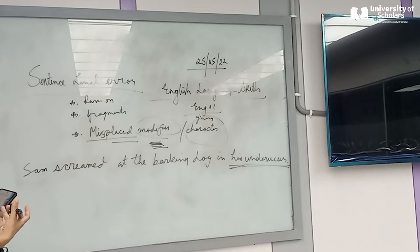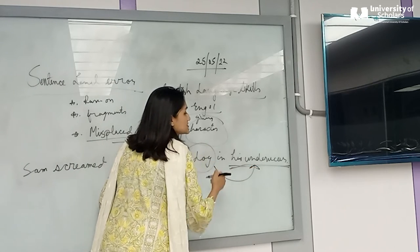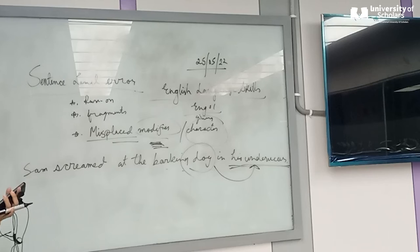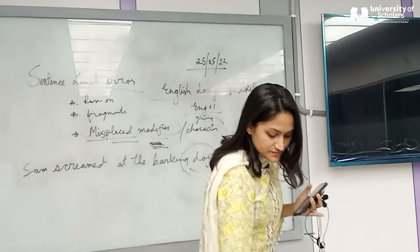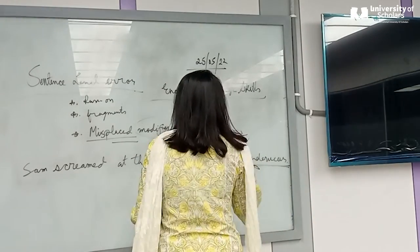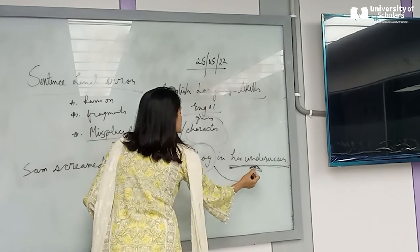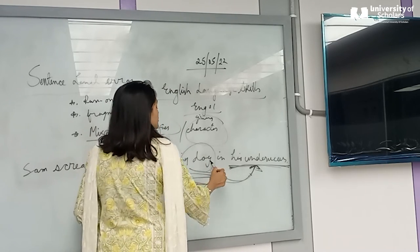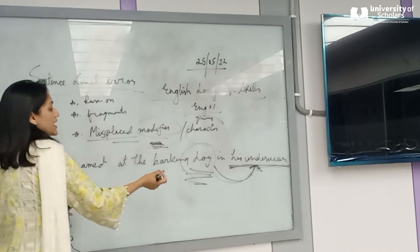If you look at this sentence, it looks like the dog is wearing underwear, which is impossible. So 'in his underwear' is misplaced — it shouldn't be next to 'dog' because that implies the dog is wearing the underwear. So where should this modifier go?